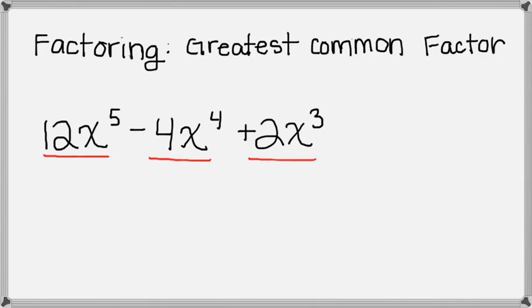So usually it's best to look at the numbers first and then look at the variables. So we can say between 12, 4, and 2, the greatest common factor is 2.